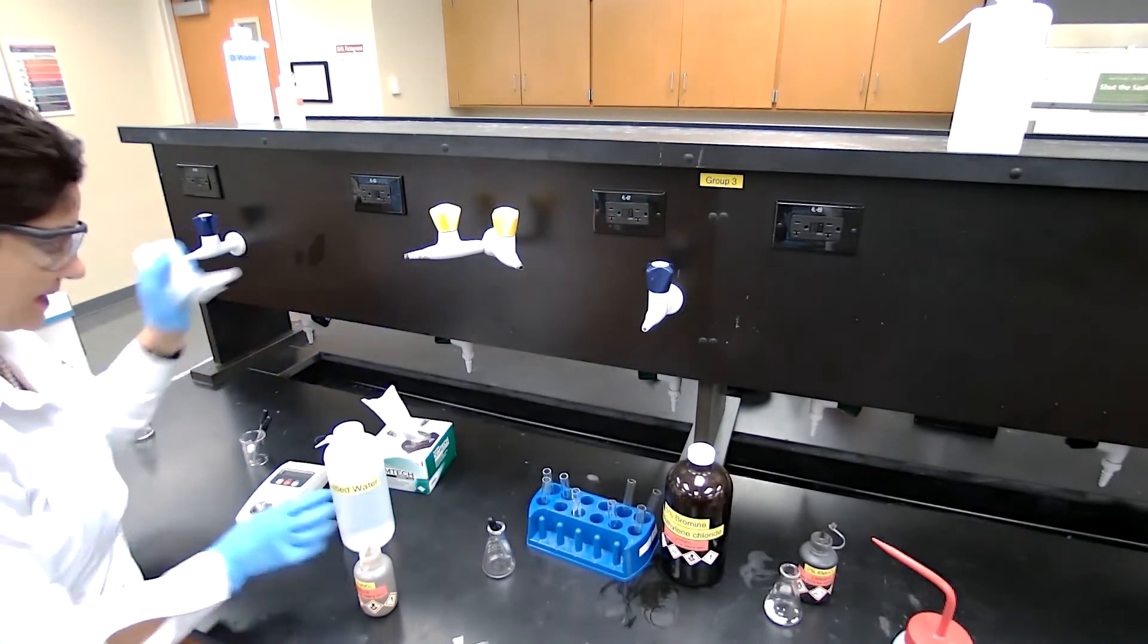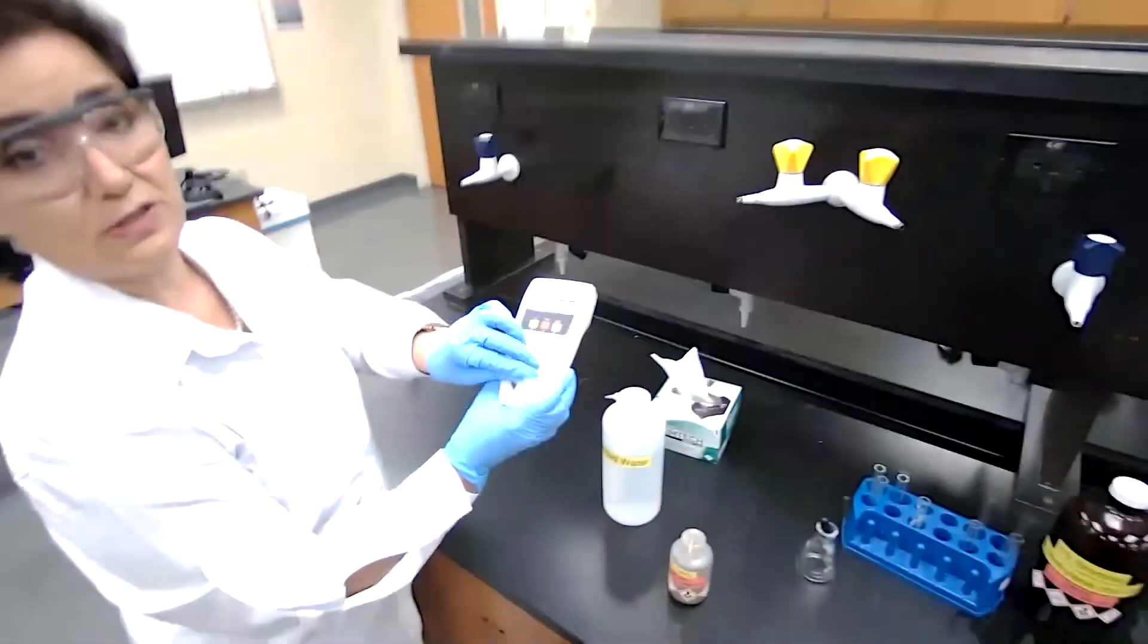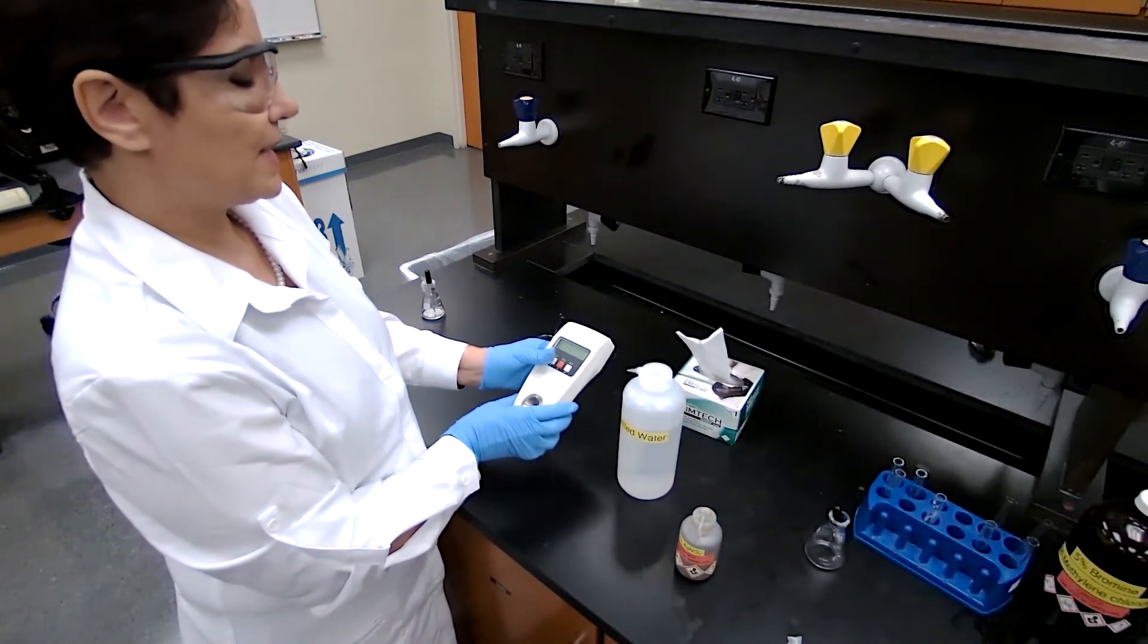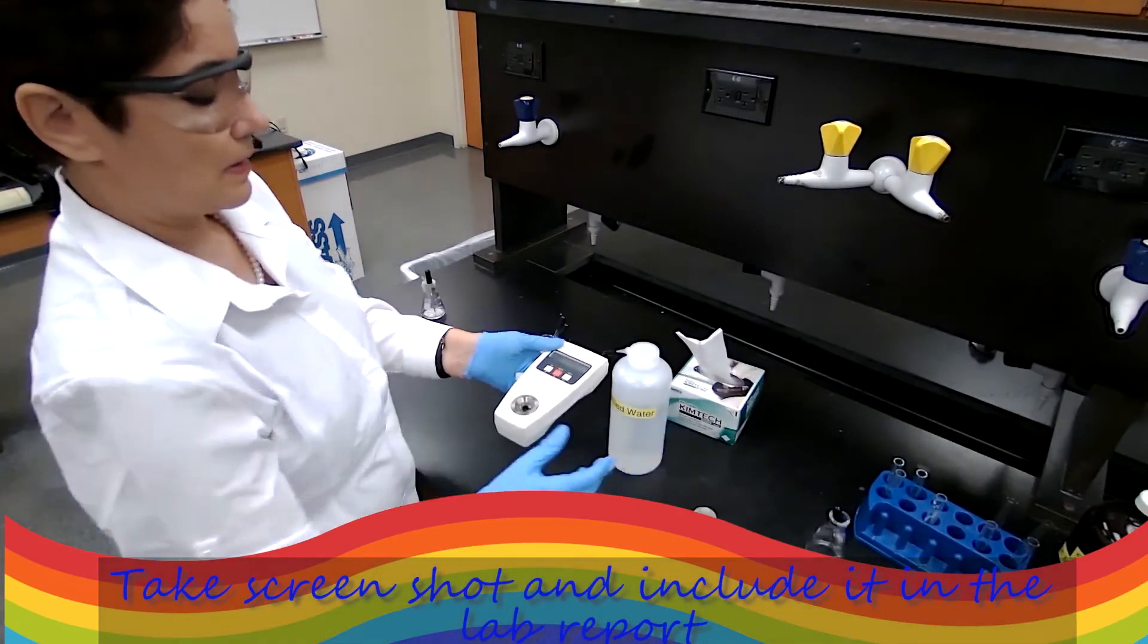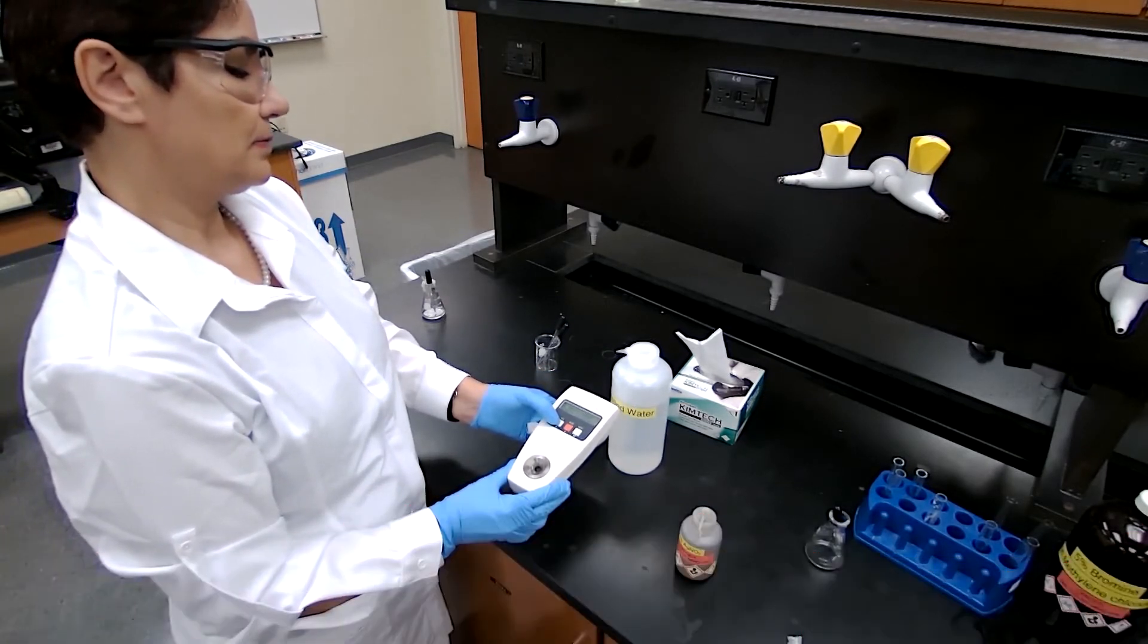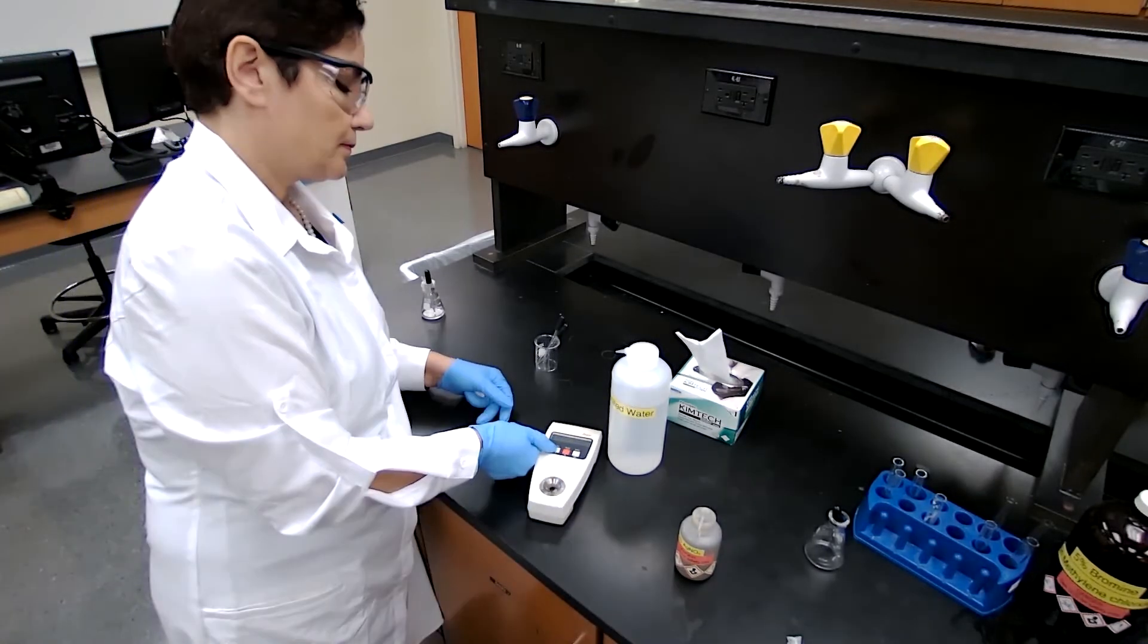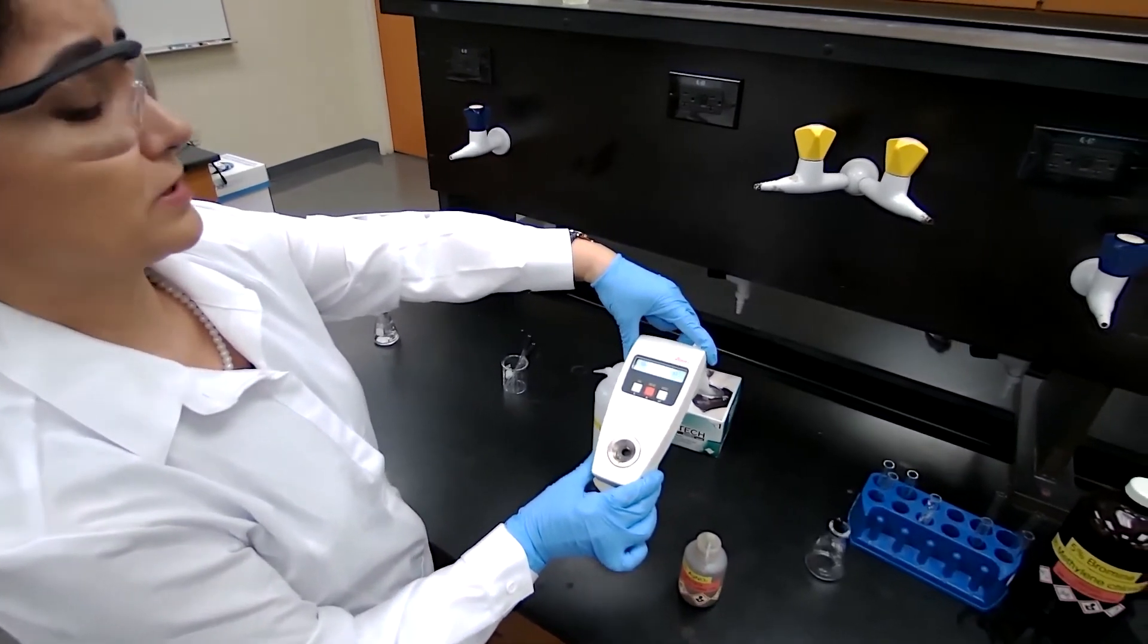This is one last test for this chemical, which is a physical test: the refractive index. For the refractive index, we are using digital refractometer. I clean usually with ethanol. We don't use acetone for this. To calibrate, we add distilled water. And when we add distilled water, it will calibrate. Just wait for it to calibrate. You have to have a direct light on it. It says the calibration point or set point calibration successful.